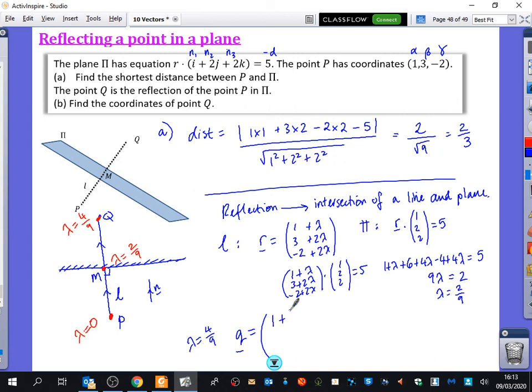So when lambda is 4 over 9, I'm going to get 1 plus 4 over 9, 3 plus 8 over 9, and minus 2 plus 8 over 9. So that is 13 over 9, 35 over 9, is that right? 27 and 8, and then that's minus 16 plus 8, and minus 8 over 9. Hang on a second, that's not right. Minus 18 plus 8, minus 10 over 9.